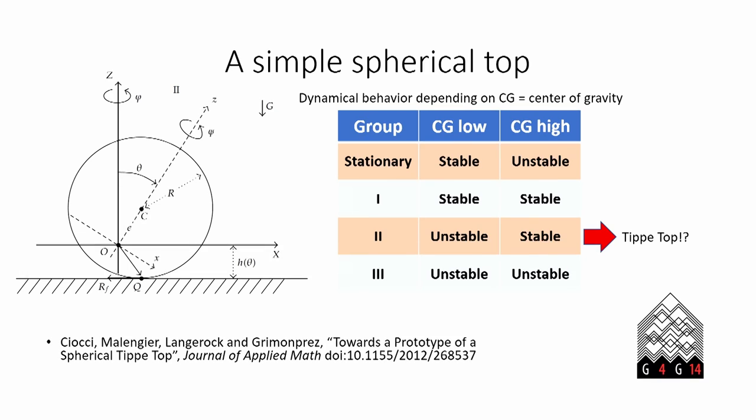What they came up with is in this table on the right. As you know, an object which is not moving has a stable equilibrium when its center of gravity is low and unstable when its center of gravity is high.